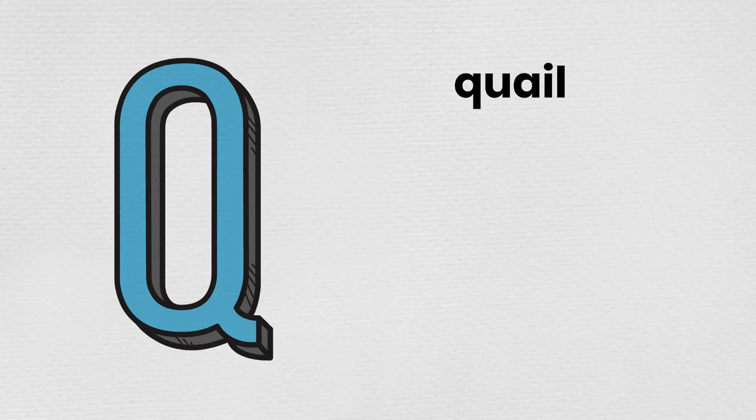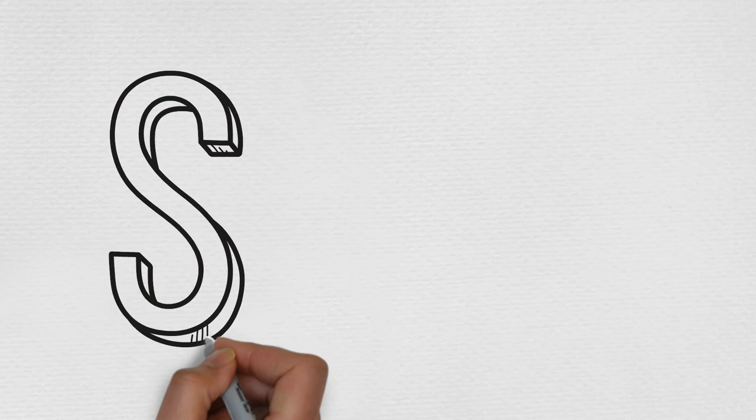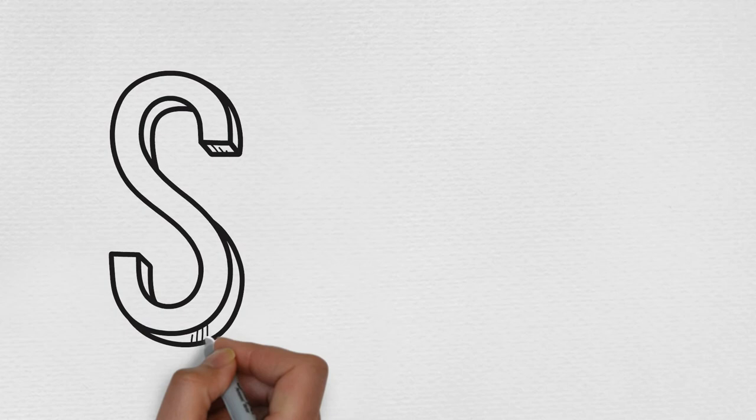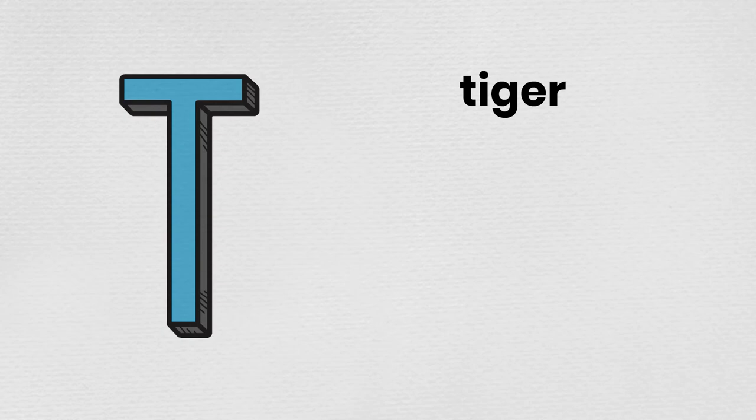Q is for quail. R is for rabbit. S is for seal. T is for tiger.